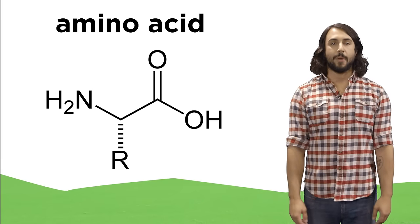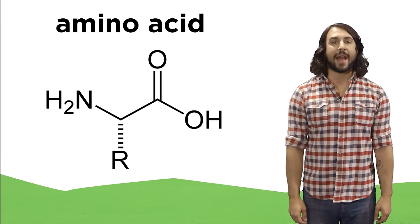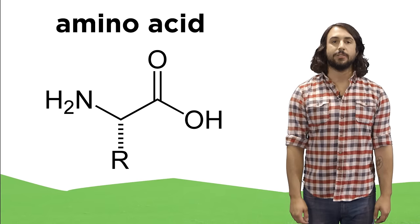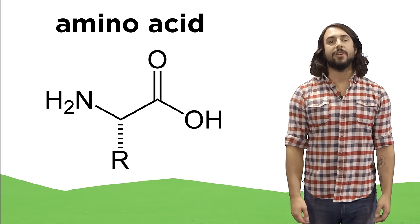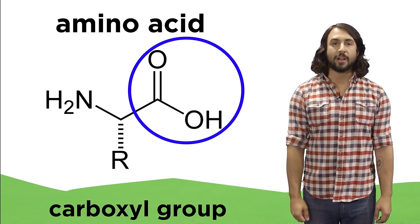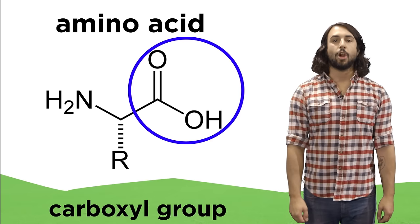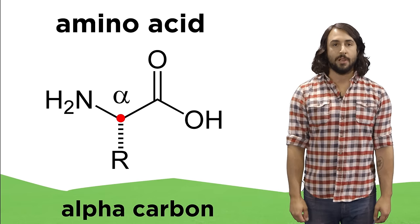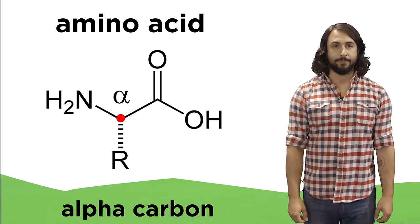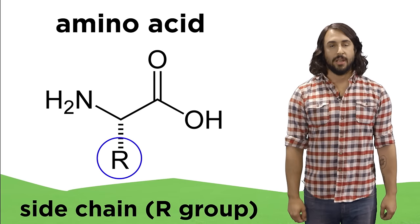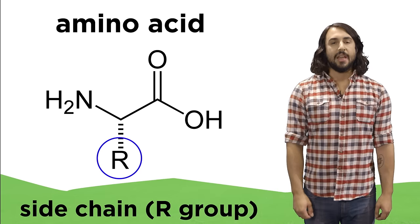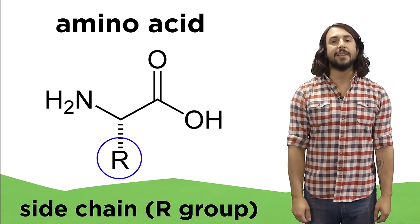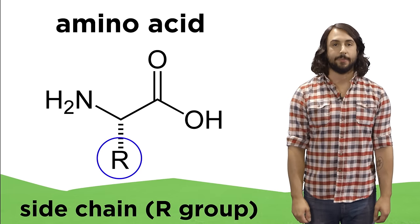The first type of monomer we will learn about is the amino acid. Amino acids look like this. They all have an amino group on one end and a carboxyl group on the other end. The carbon in between those functional groups, which we call the alpha carbon, will bear a side chain, sometimes referred to as an R group. This is a group that varies depending on which amino acid we are looking at.